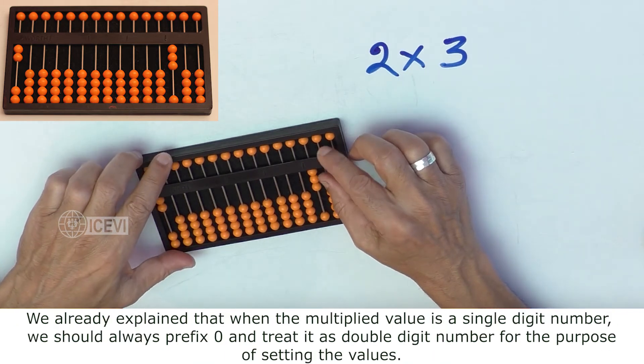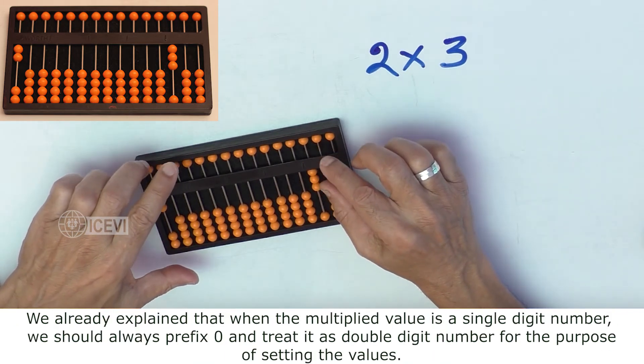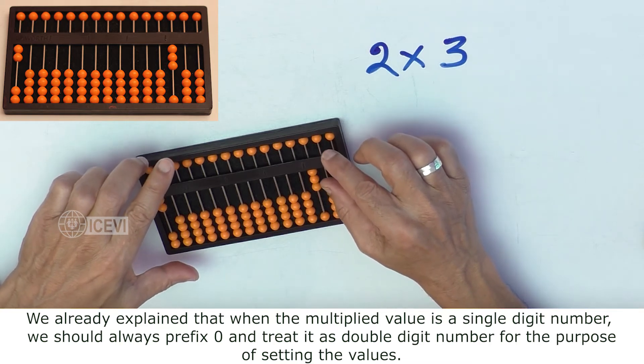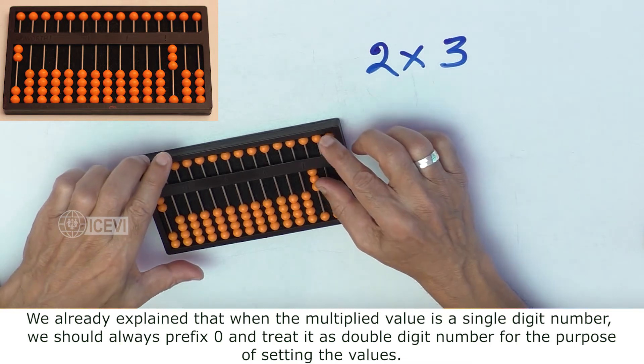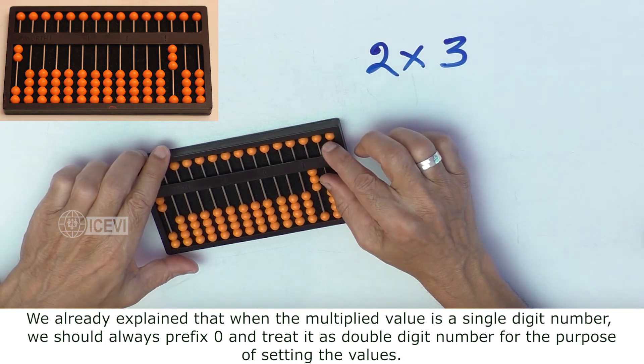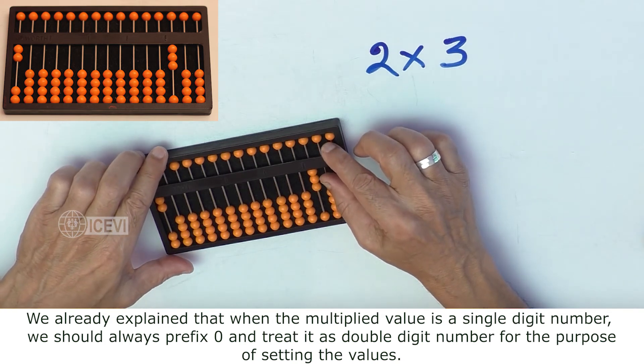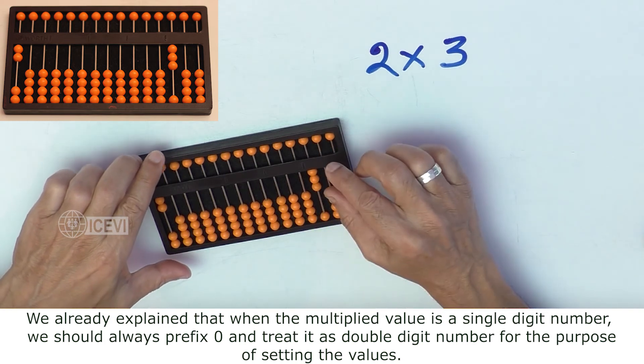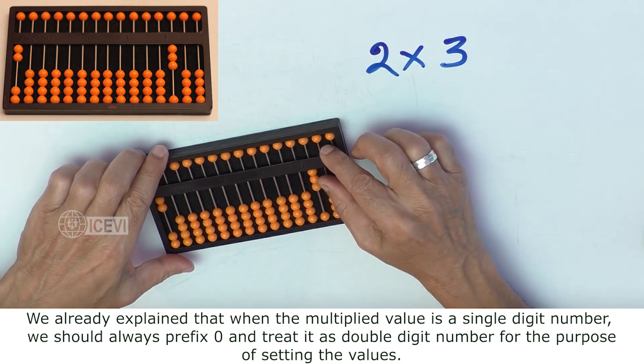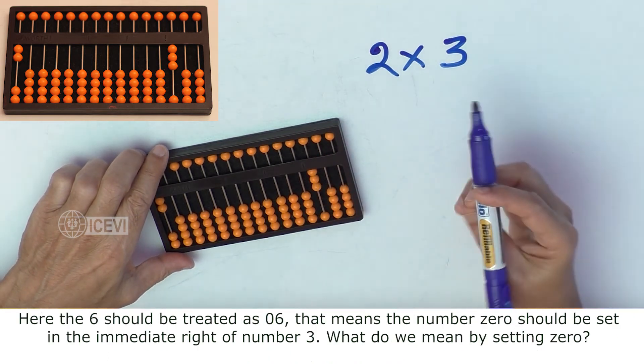We already explained that when the multiplied value is a single-digit number, we should always prefix 0 and treat that as a double-digit number for the purpose of setting the values.